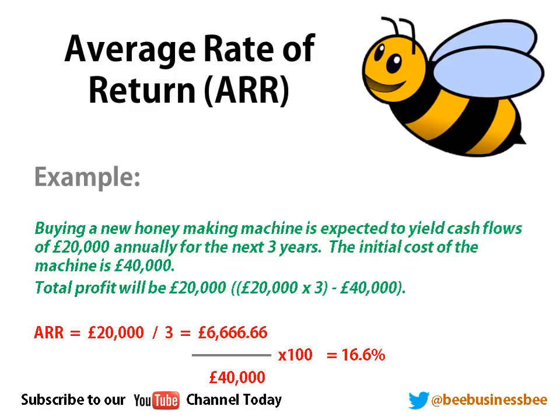So let's use the formula. £20,000 divided by my 3 years gives me £6,666.66. Divided by my initial cost of £40,000, which gives me a return of 16.6%. Should I invest in my honey making machine?